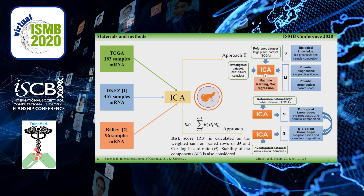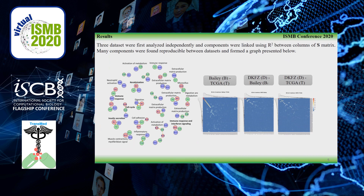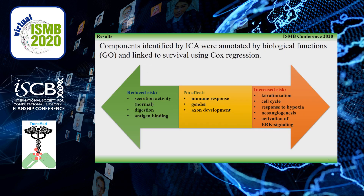Components identified by ICA were annotated by biological functions using the top-core package of R and an online annotation tool. In addition, the weights were linked to survival using Cox regression. Three datasets were first analyzed independently and components were linked using coefficients of determination between columns of S-matrices. Many components were found reproducible between datasets, as shown in the graph presented below.